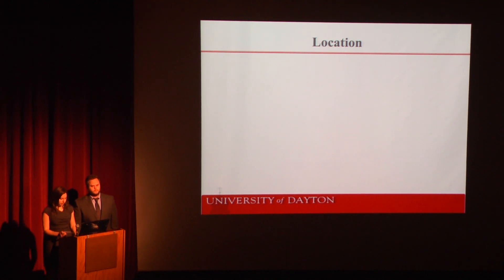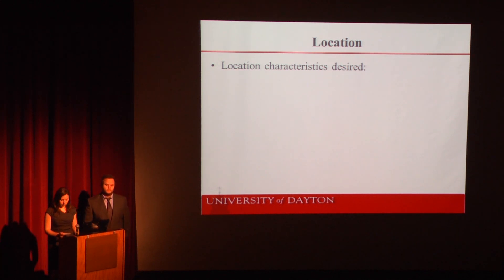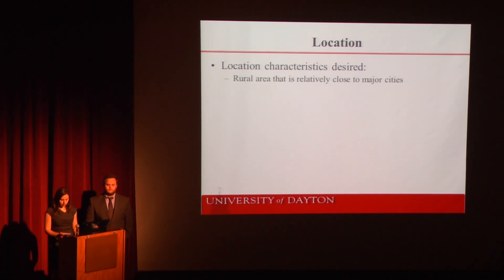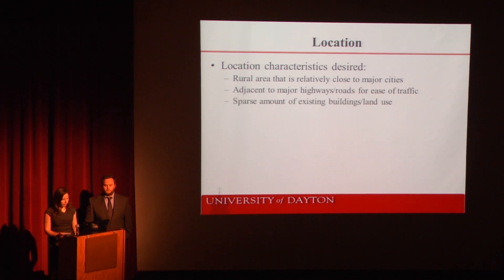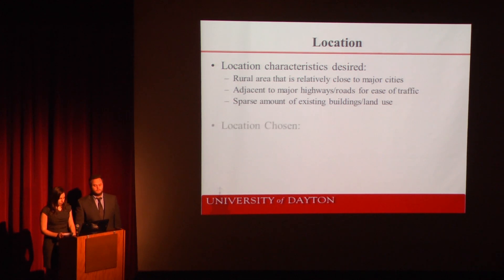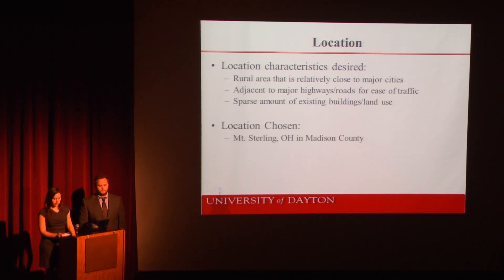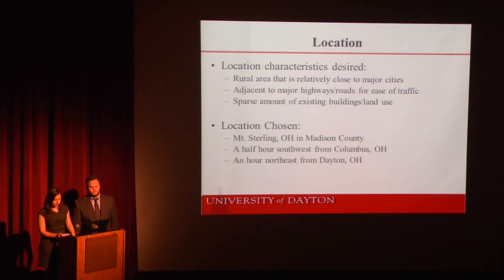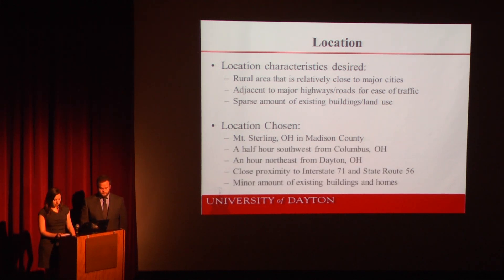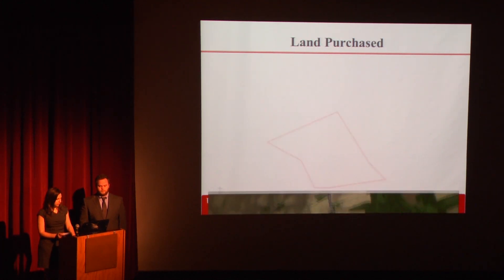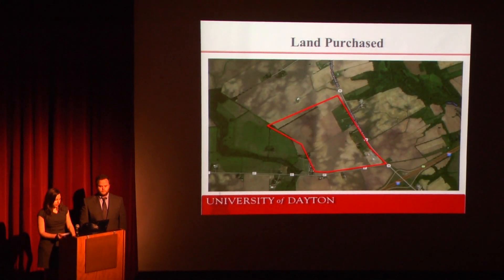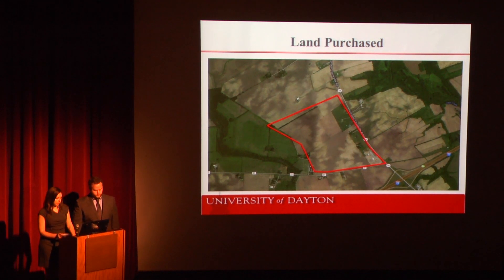Due to the unique characteristics of NASCAR, such as the noise generated during races and the space needed for camping and tailgating facilities, it was important to find a location that was rural but close to major cities, adjacent to major highways and roads, and sparsely populated so as to displace the fewest people possible. We chose a location near Mount Sterling, in Madison County. It is close to both Dayton and Columbus, and immediately adjacent to I-71 and State Route 56. The location chosen is mostly farmland, so there is very little around to be adversely affected by the addition of the complex.